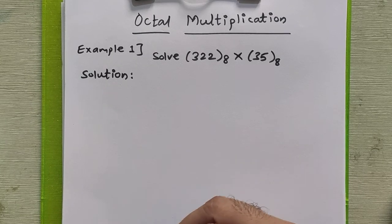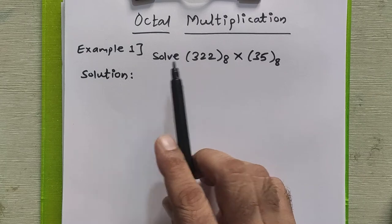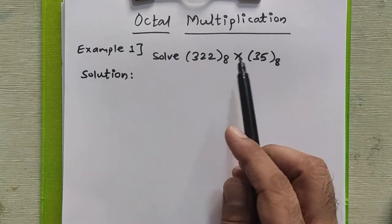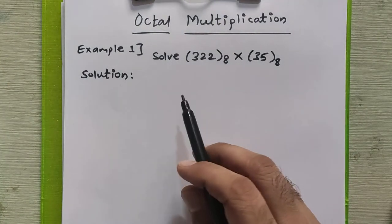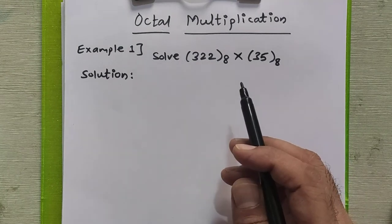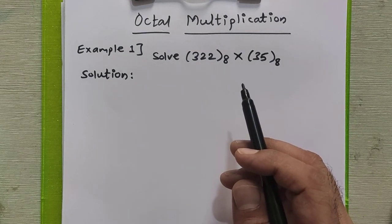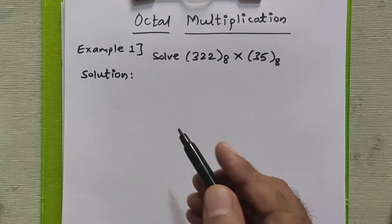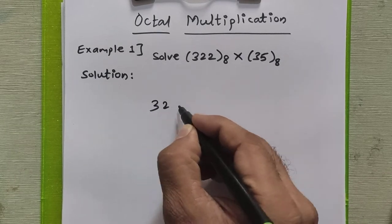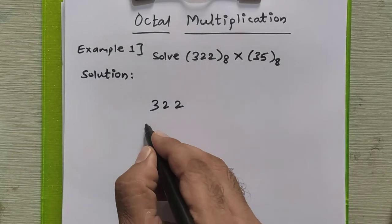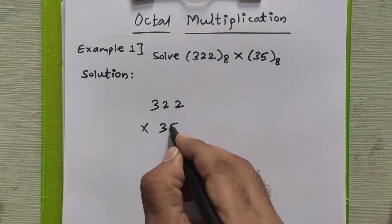In this tutorial we are going to study how to multiply two octal numbers without converting to any other base. We will perform the multiplication the same way we perform multiplication in decimals. Here we will write the given numbers: 322 into 35.